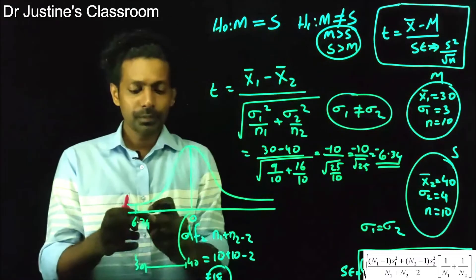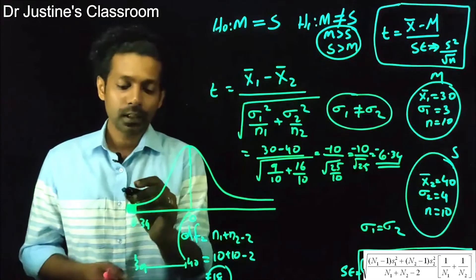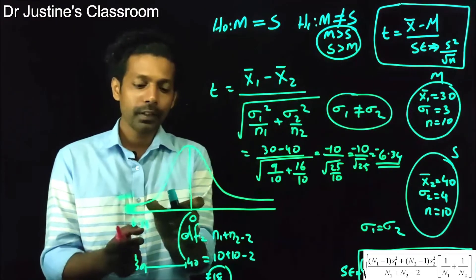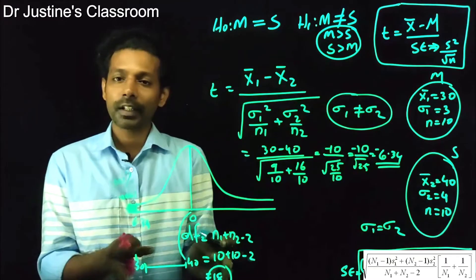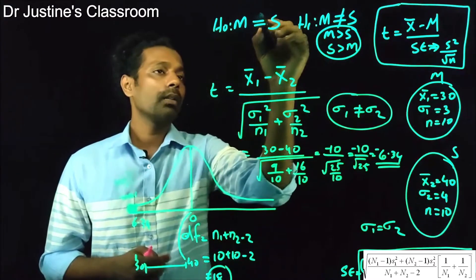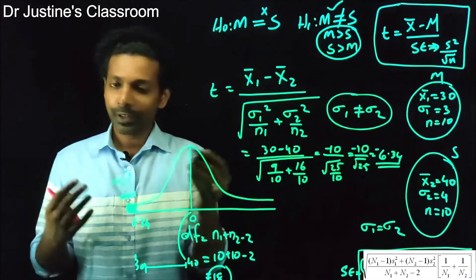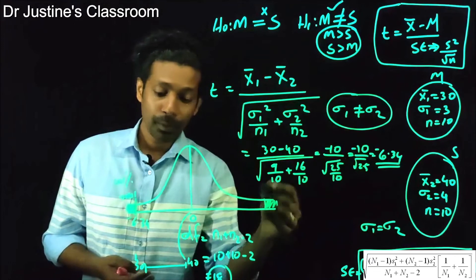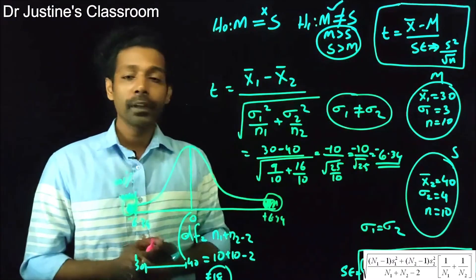That 6.34 standard deviation distance means the area under the curve beyond that point is almost zero — approximately 0.000001. So there is an extremely small chance that a difference of 10 would occur if both groups came from the same population. For a two-tailed test, we consider both -6.34 and +6.34, and the combined area is the significance value.